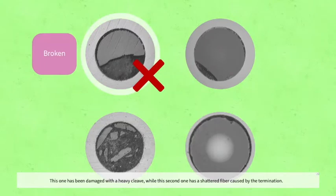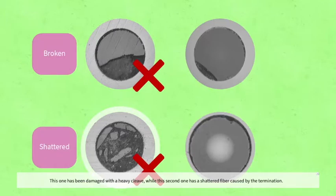This one has been damaged with a heavy cleave, while this second one has a shattered fiber caused by the termination. The fiber is broken inside the ferrule, and this connector should be discarded and is not repairable.